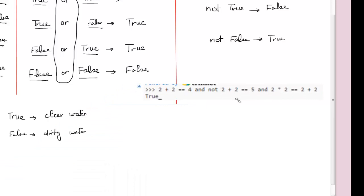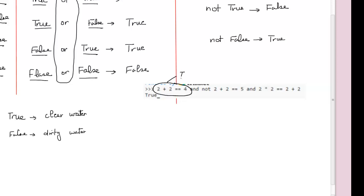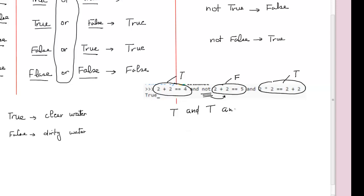Now let's take this example — I like it very much. I have: (2 + 2 == 4) and not (2 + 2 == 5) and (2 * 2 == 2 + 2). The first part: 2 plus 2 equals 4 — this is true. The second part: 2 plus 2 equals 5 — is 4 equal to 5? This is 100% false. So not false is true. The third part: 2 times 2 equals 2 plus 2 — 4 equals 4, this is true. So it's saying true and not false and true, which means true and true and true. I'm mixing clean water with clean water with clean water — right away, the answer is going to be true.